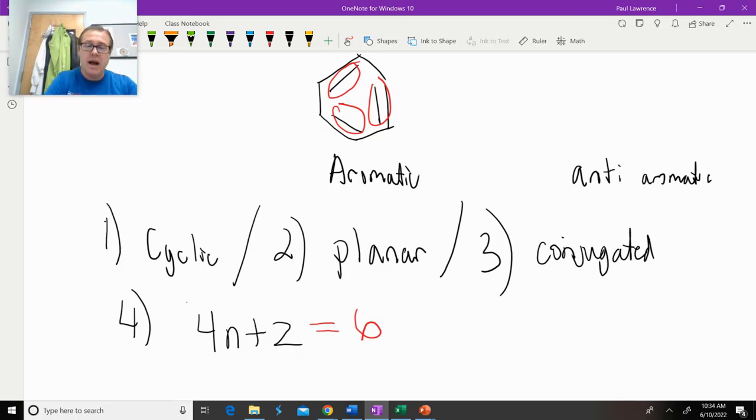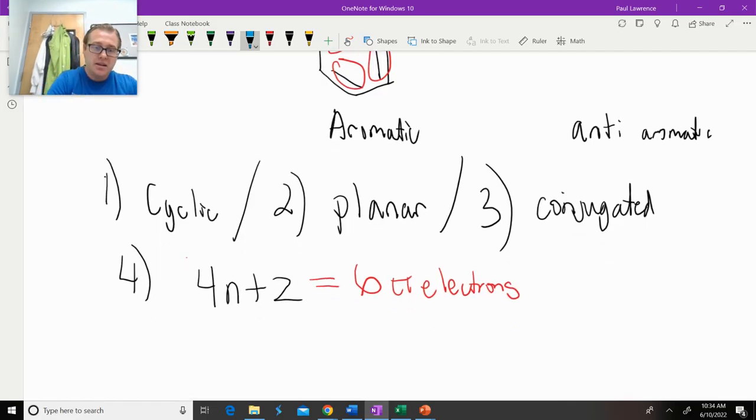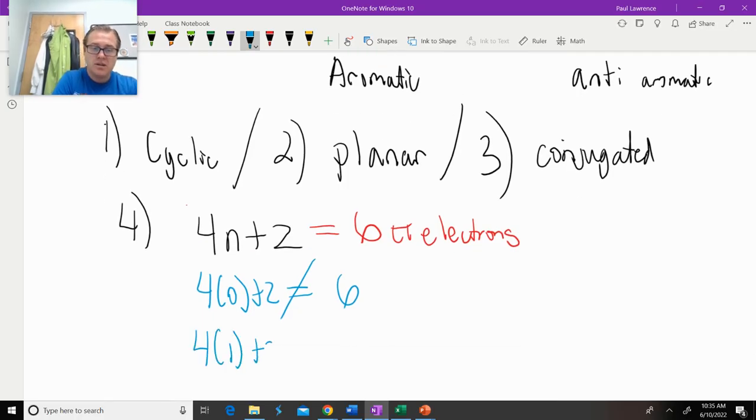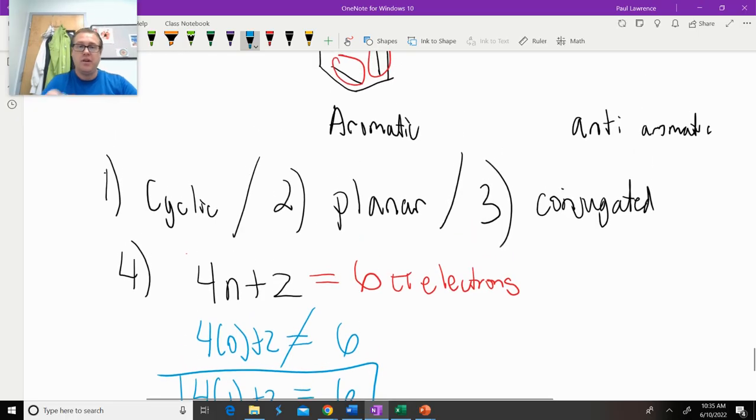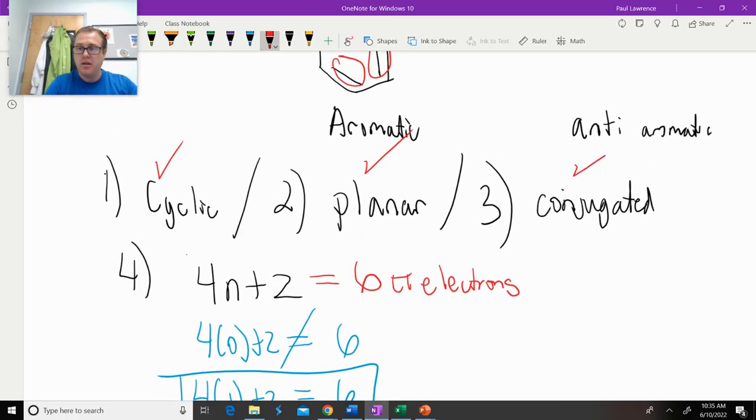We take the equation and say 4n plus 2 equals how many pi electrons do we have? And n is any whole number integer. So 0, 1, 2, 3, and so on. You just pick an integer that's a whole number. And if it makes the statement true, then you satisfy Huckel's rule. So if I go 4 times 0 plus 2, does that equal 6? No, it does not. So I keep trying. 4 times 1 plus 2, does that equal 6? Yes, it does. Boom. Got it. So if your compound is cyclic, planar, completely conjugated, and satisfies that equation, the compound is aromatic.